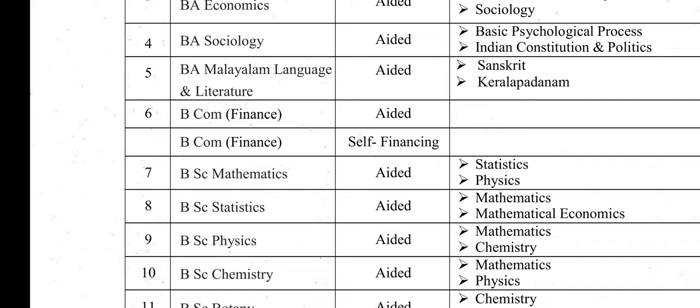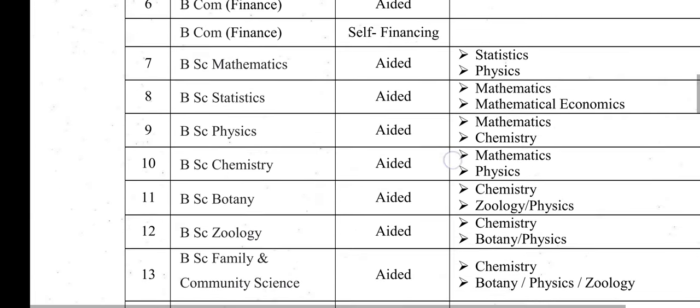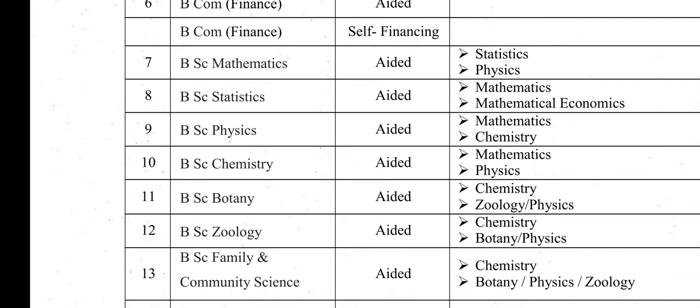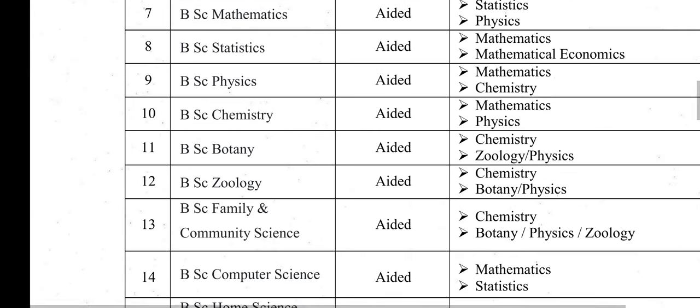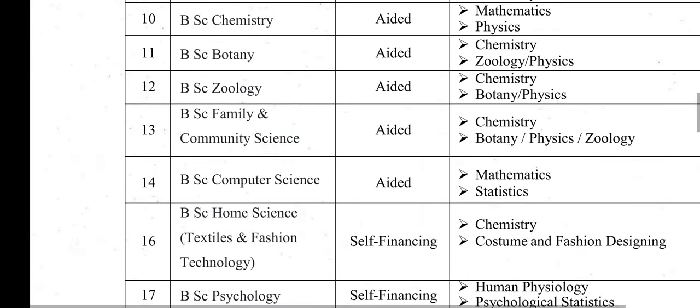There are BSc courses like BSc Maths, Statistics, Physics, Chemistry, Botany, Zoology, Family and Community Sciences, Computer Science, Home Science, and Psychology. These are the available BSc courses.